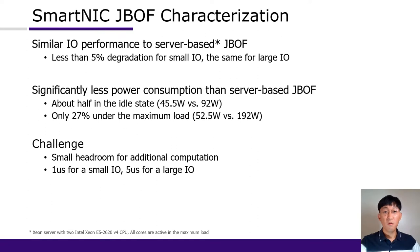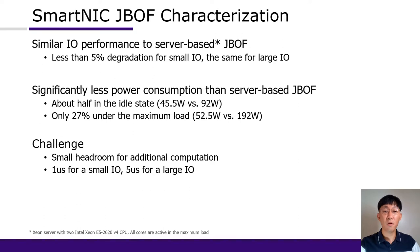Let's look at some numbers. We evaluated the performance and power consumption of SmartNIC. It shows similar IO performance to server-based JBOFs — specifically the same performance for large IO sizes, and less than 5% performance degradation for small IO sizes. In terms of power consumption, the idle and maximum power consumption were only 50% and 27% of a server-based platform. However, there is a challenge: SmartNIC has a small headroom for additional computation — only 1 microsecond for small IO and 5 microseconds for large IO.